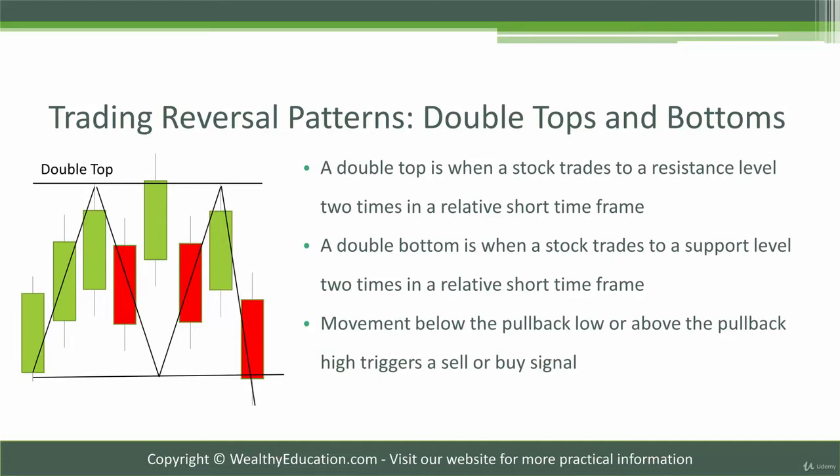And the same is true for the double bottom, with the psychology being that the stock that has been in a downtrend is now reversing course, because it has failed to break through a support level two times in a row, and now the bulls are taking control as they take it higher than the pullback high reached in the double bottom pattern.